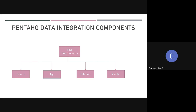Then we have Pan. Pan is a standalone command line process that's used to execute transformations and jobs that are created in Spoon. So when we execute transformations or jobs from the command line, we're using Pan. When we actually build the ETLs themselves, we're using Spoon.